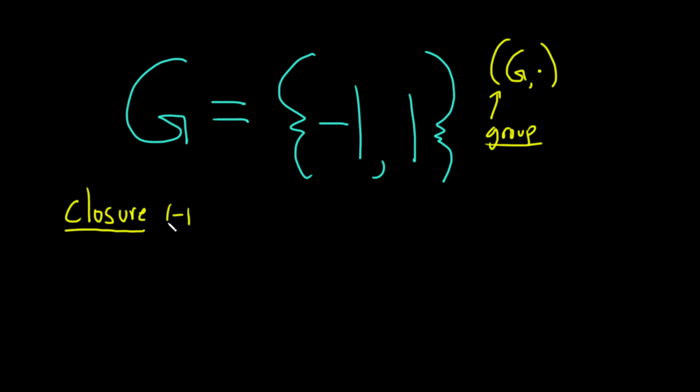So if we take negative one and we multiply it by negative one, I didn't put the dot there, but you can assume that we're using the group operation, which is multiplication, you're going to get one. And that's in G, right? There's no issues there. If you do negative one times one, you're going to get negative one, that's also in G. If we do one times negative one, we're going to get negative one. That's also an element in our set G. And if you do one times one, you're also going to get one that's also an element in G. So closure is satisfied.